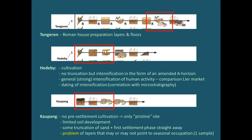At Kaupang, as Sven already said, there were no traces microscopically of pre-settlement cultivation. This is the only kind of pristine site mentioned. There is some limited soil development on the sandy soils and some truncation under the settlement phase. What Sven noted about possible seasonal occupation was seen in only a single sample with a few charcoal layers, so this is quite tentative and would require more evidence to confirm.